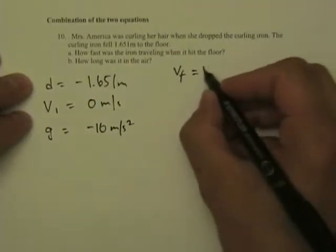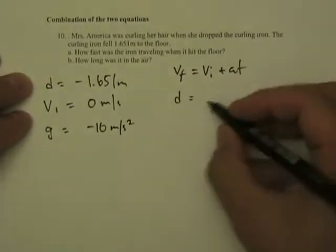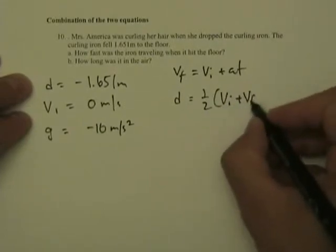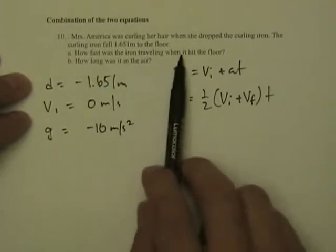You have two formulas: VF equals VI plus AT, and you have D equals one half VI plus VF times T. We're gonna use them in conjunction to figure out how fast was the iron falling when it hits the floor.